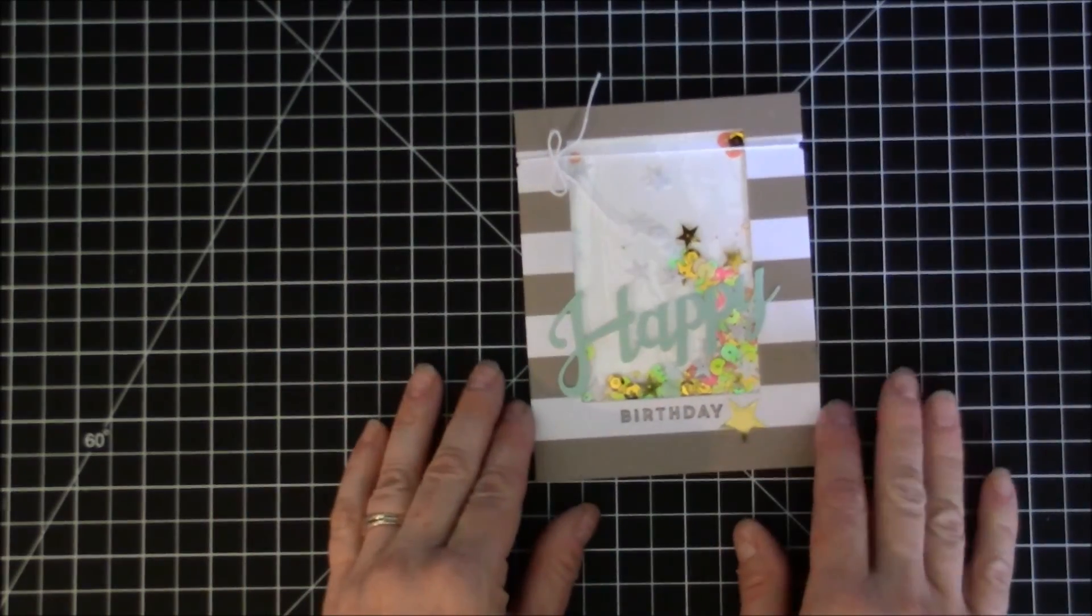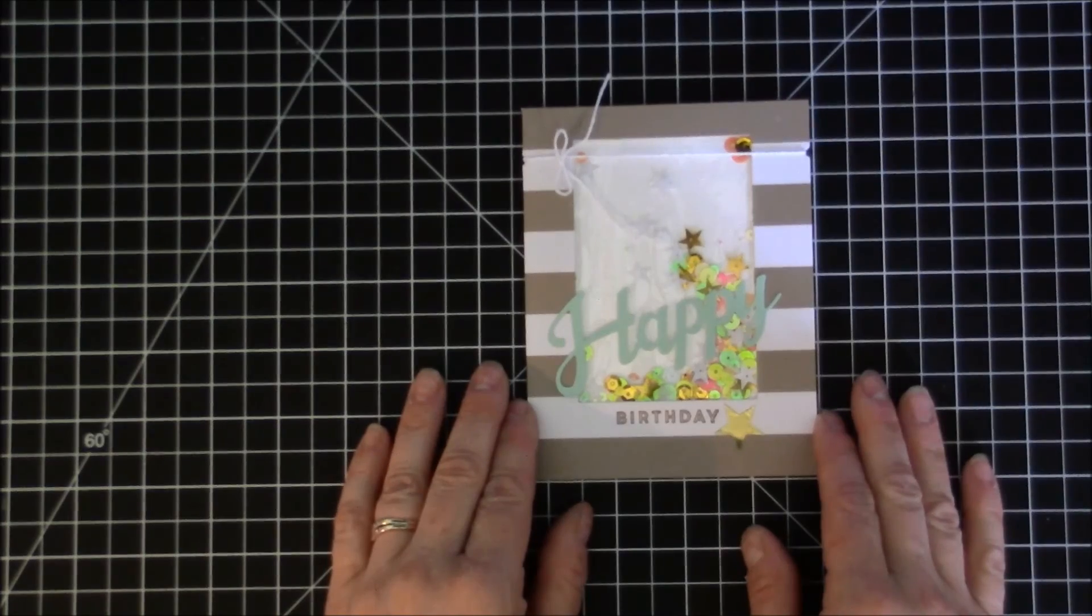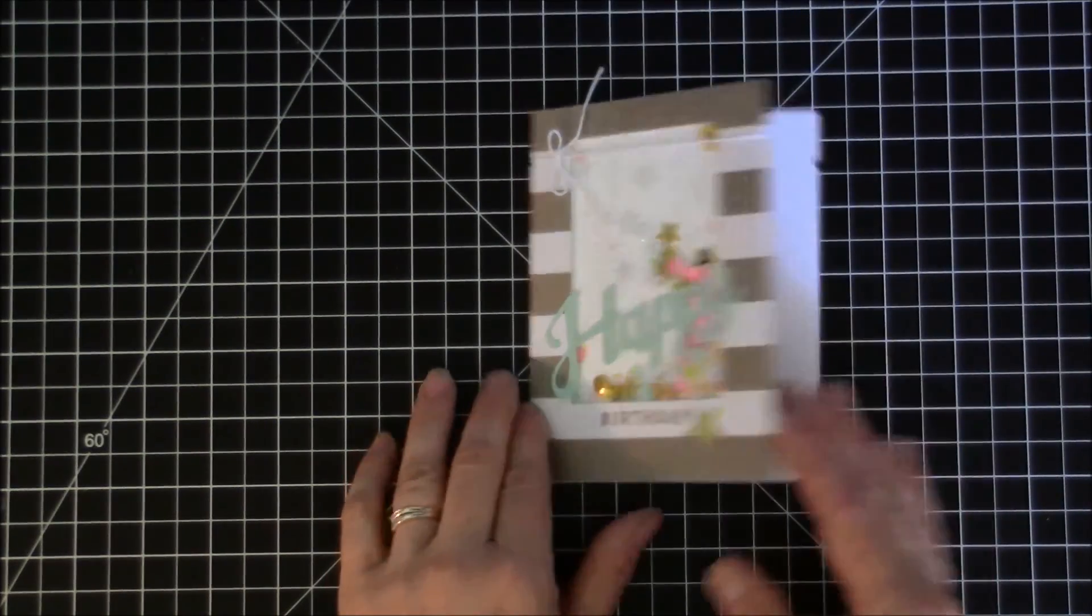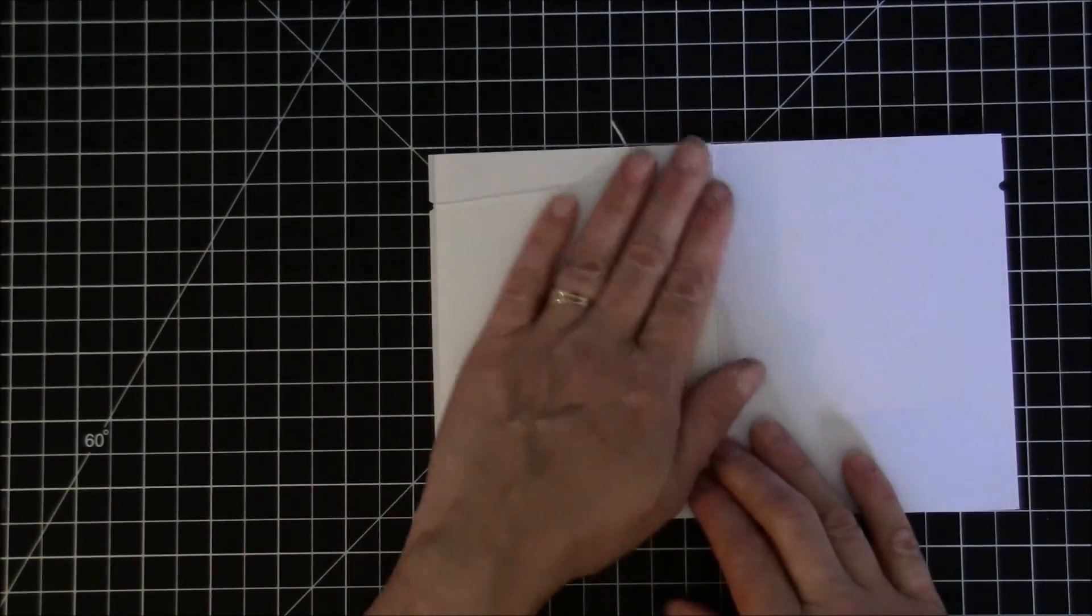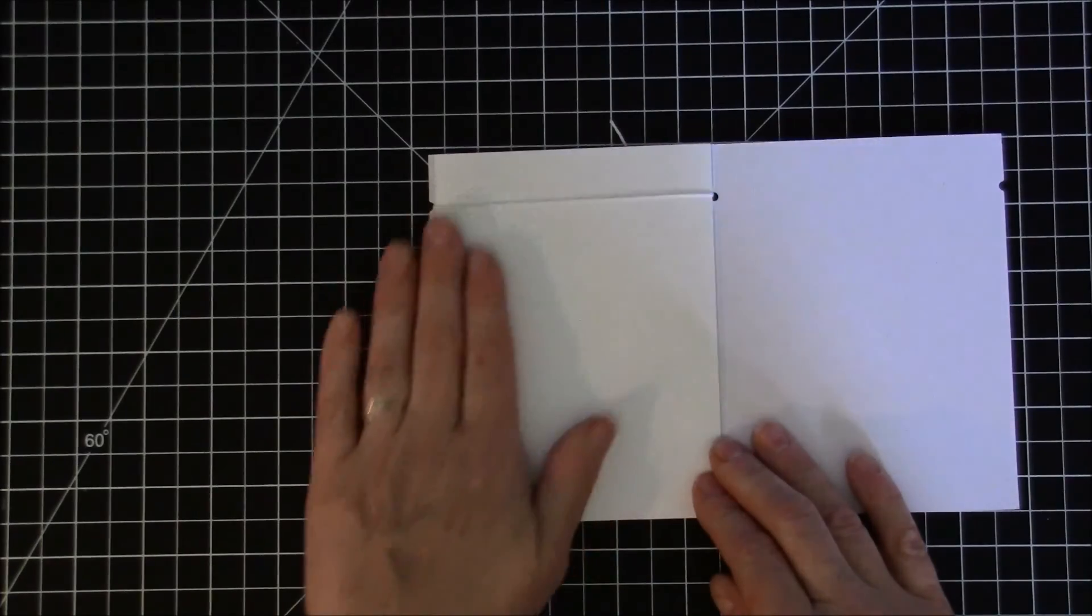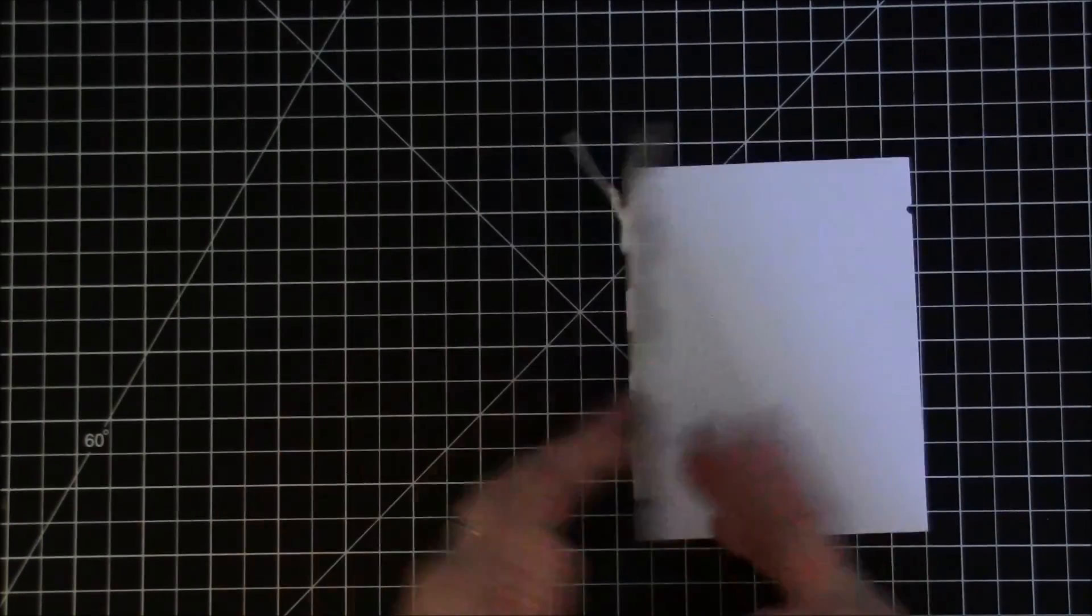I used foam squares on the back, filled it with sequins, and then glued another panel on the top to hold everything all together.